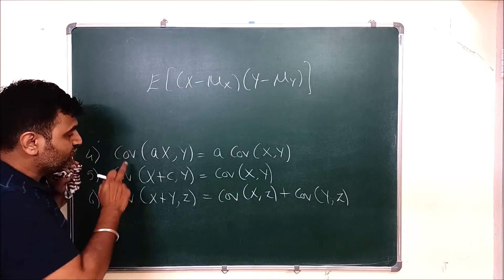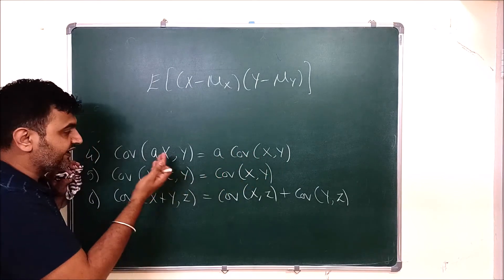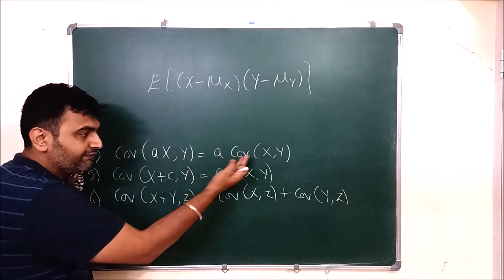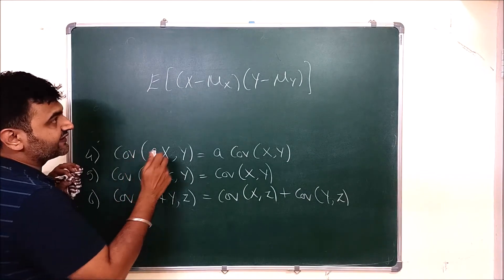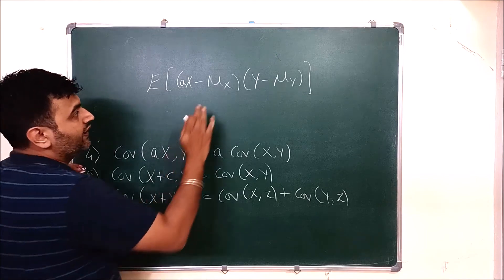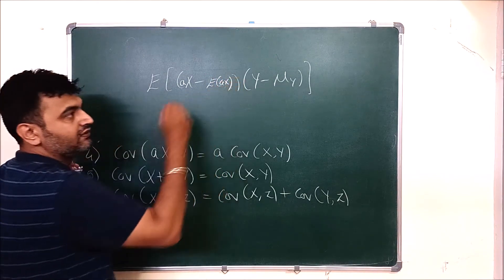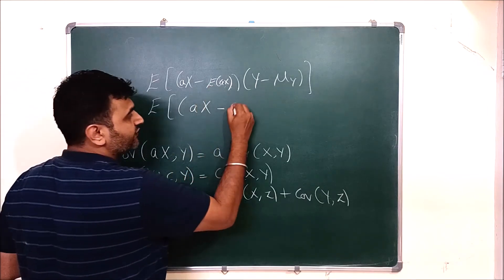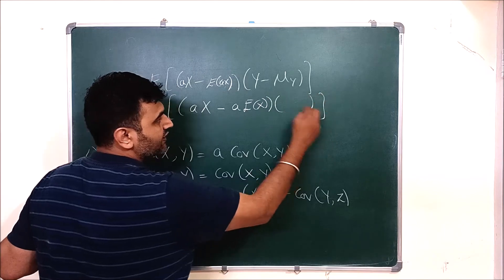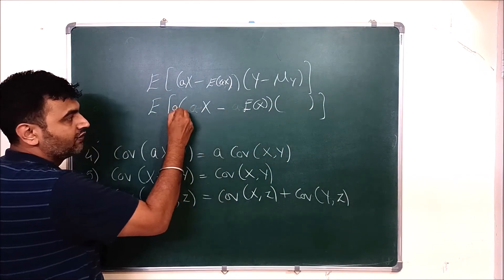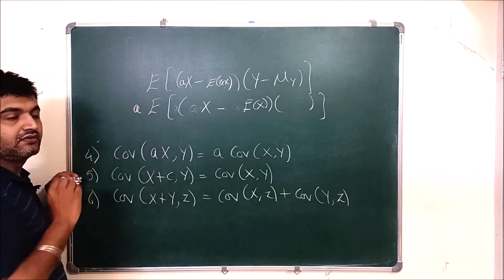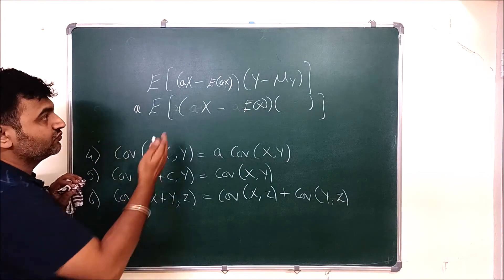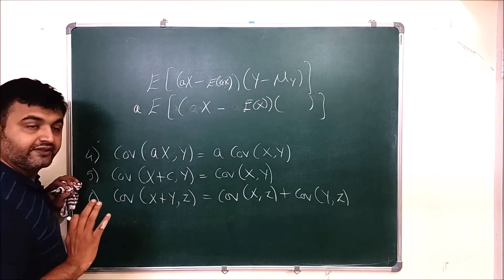The fourth property: covariance behaves well with scalar multiplication — Cov(aX, Y) = a·Cov(X,Y), so a comes outside. The same applies for the second variable: Cov(X, bY) = b·Cov(X,Y). The proof uses properties of expectation: E[aX] = a·E[X], so the scalar factors out and you get a·Cov(X,Y).